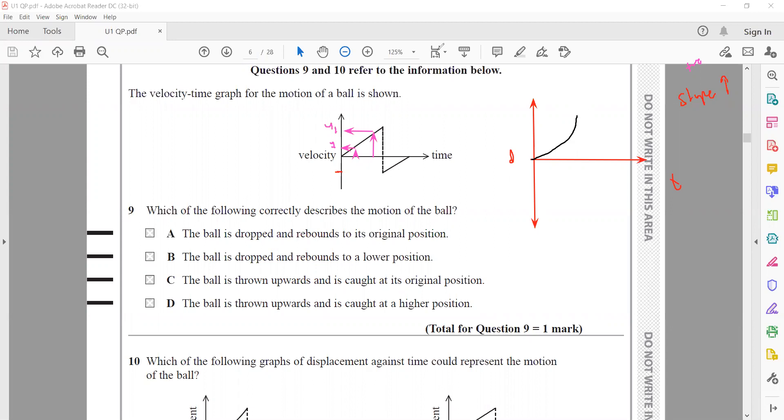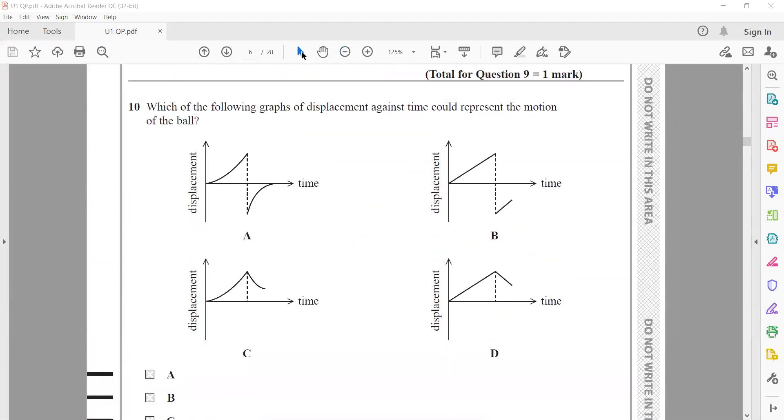When we check the displacement-time graphs, B and D cannot be the answer because they show initial slope is constant, meaning velocity is constant. It can be A or C. The correct answer is C because Y1 is above Y2, so it's a negative slope. C is the right answer.